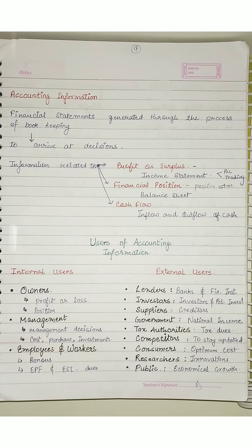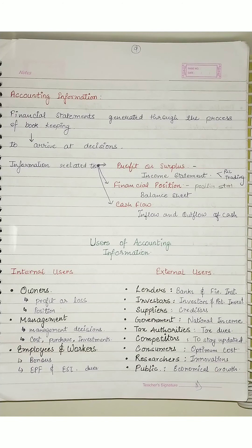Next are researchers — researchers need to do innovations, and to innovate, they need accounting information. Last is the public — how is it important for the public? For economic growth — like how much employment is being generated, how work is happening with suppliers — all these things combined make accounting information important for the public as well.